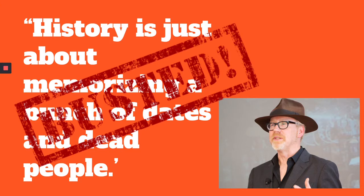History is about tracing the impact of events and people to our present day — looking at how decisions made in the 1940s are still affecting us today. We study history to validate and give value to the individual story. We want to look at the impact people have made, both in the people we always talk about and the people we don't talk about, making sure we give room for everyone's stories.